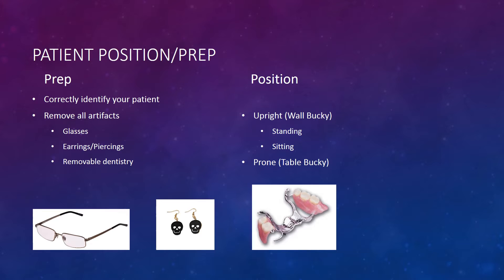The most recommended position for this projection is upright. The patient may stand or sit at the upright wall bucky. This ensures a horizontal beam, which is necessary for sinus imaging to demonstrate air and fluid levels. Depending on the condition of the patient, he or she may lie in the prone position on the radiographic table. It is important to remember that in this position, air and fluid levels cannot be seen because the beam is not horizontal.